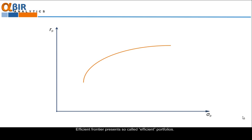Efficient frontier presents so called efficient portfolios. These are the portfolios which have the best risk return characteristics. Let me remind you why. All portfolios below the efficient frontier are inefficient. There are other combinations either with better return at the same level of risk or with better risk at the same level of return.